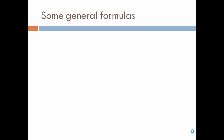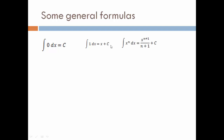Let us have a look at some general formulas. First: ∫0 dx = c, meaning the anti-derivative of 0 is any constant. Then: ∫1 dx = x + c, meaning the anti-derivative of 1 is x plus a constant. A constant is always added because when you differentiate, some constant might have become 0. Then: ∫x^n dx = x^(n+1) / (n+1) + c.